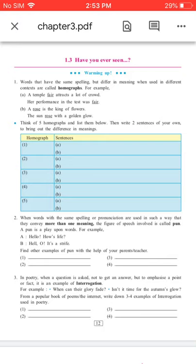Words that have the same spelling but different meanings when used in different contexts are called homographs. For example, a temple fair attracts a lot of crowd. Her performance in the test was fair.